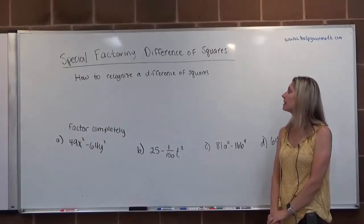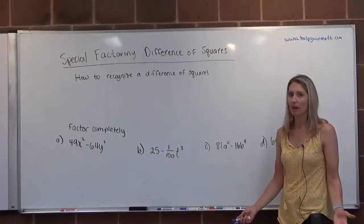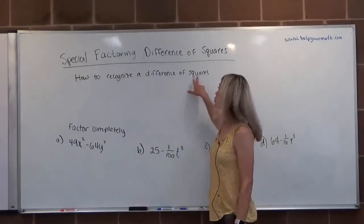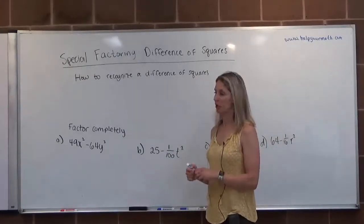So how do we recognize a difference of squares? It basically tells you what it is. Difference implies subtraction, squares in this case implies square roots.